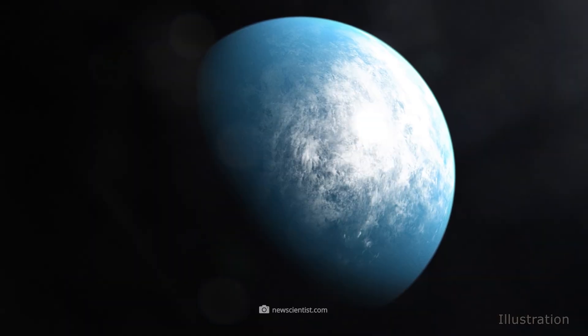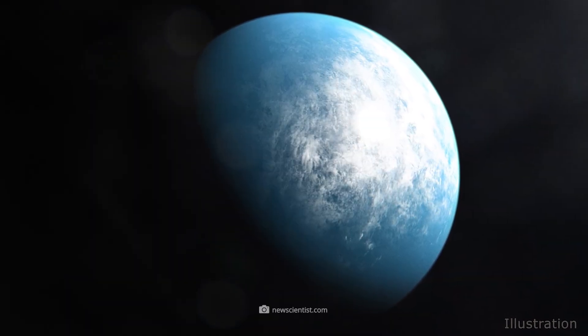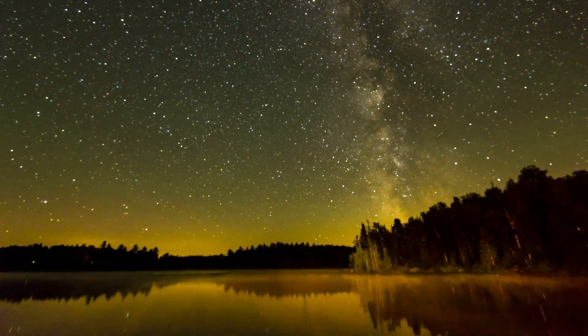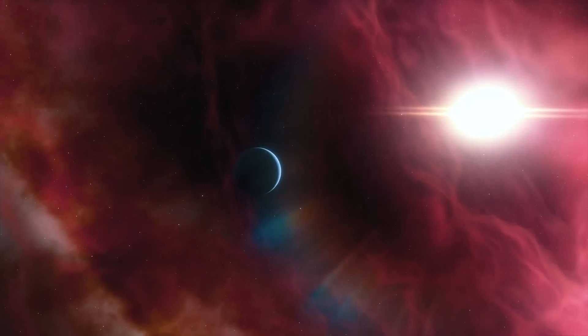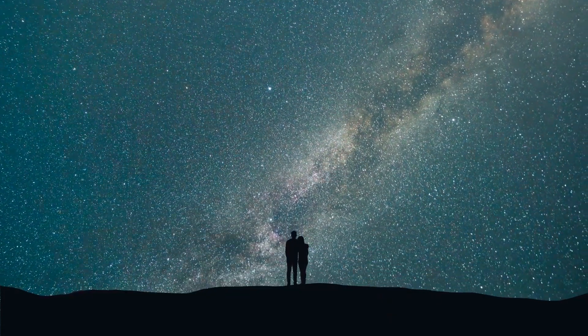With an ESI value of 0.93, TOI 700d finds itself in second place, about 593.7 trillion miles away from us. The exoplanet is about 20% larger than our terrestrial home. The celestial body takes 37 days to orbit its ancestral red dwarf.